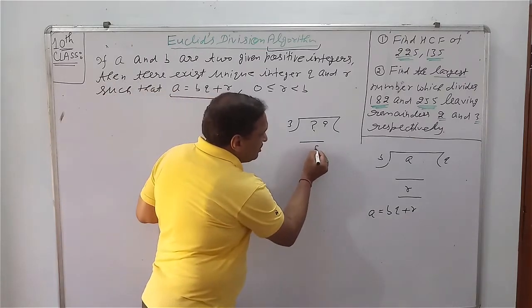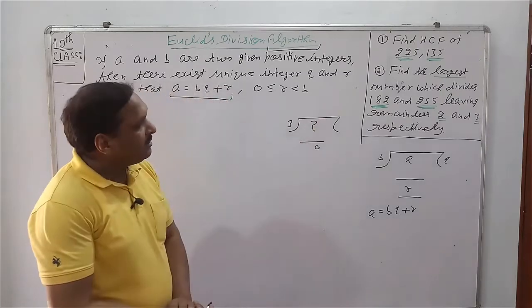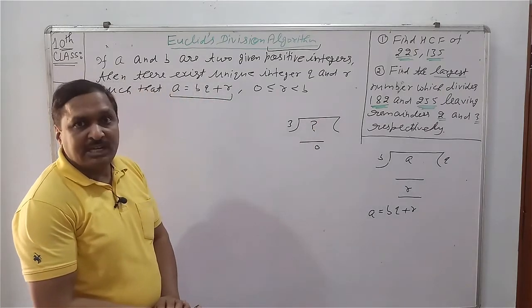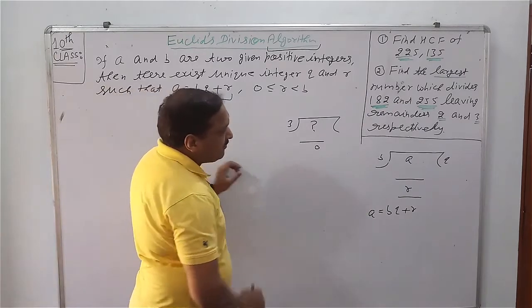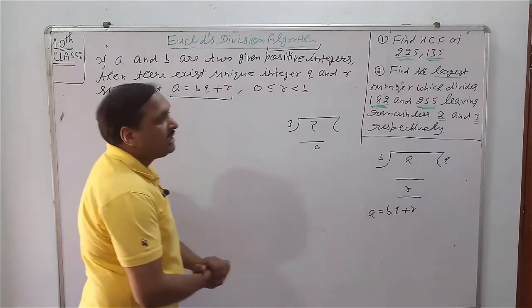So remainder is 0. When we divide 10 by 3, we get remainder 1. It means remainder always be less than divisor.